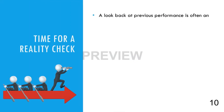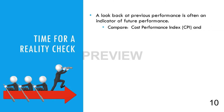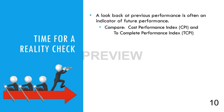Often, a look back at past performance can provide insight into future performance. This method also provides a means of checking the realism of the EAC. This can be done by comparing the cost performance index, or CPI, to the to-complete performance index, or TCPI, to provide the reasonableness of the EAC.